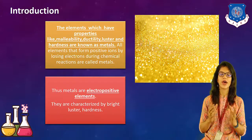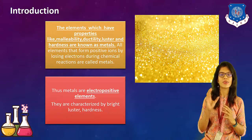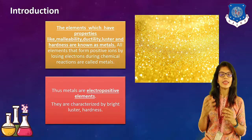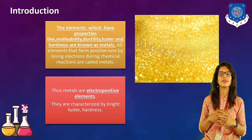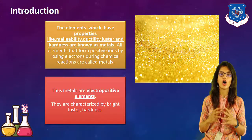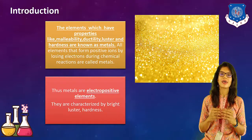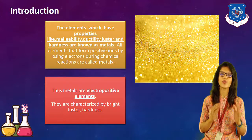The elements which have properties like malleability, ductility, luster and hardness are known as metals. The elements that have specific properties — when any kind of element has the properties of shine, of lusterness, malleability and ductility, they are referred to as metals. All the elements that form positive ions by losing electrons during chemical reactions are called metals.